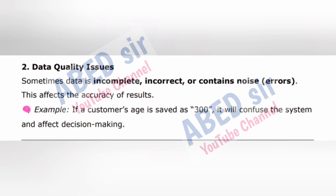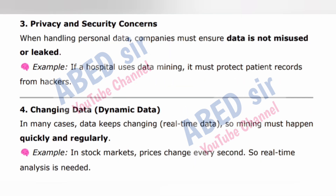2. Data quality issues — sometimes data is incomplete, incorrect, or contains noise and errors. This affects the accuracy of results. Example: if a customer's age is saved as 300, it will confuse the system and affect decision making. 3. Privacy and security concerns — when handling personal data, companies must ensure data is not misused or leaked. Example: if a hospital uses data mining, it must protect patient records from hackers.